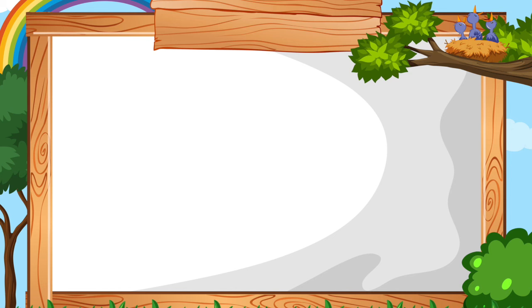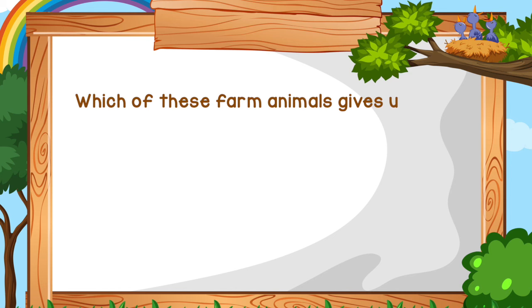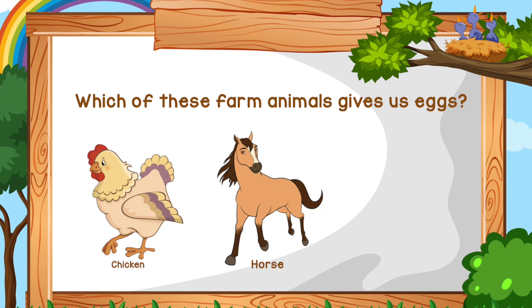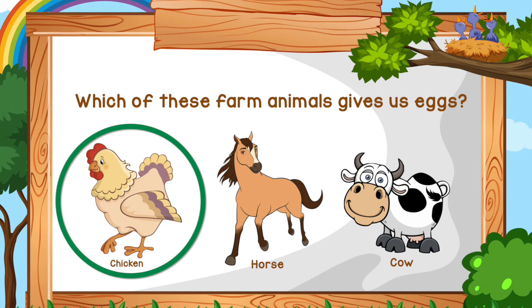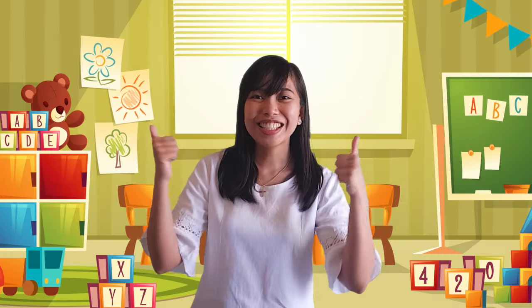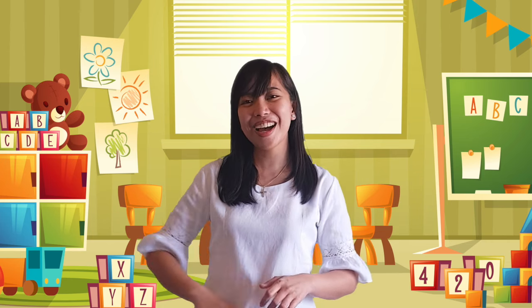Which of these farm animals gives us eggs? Chicken. Horse. Or cow. Very good! The correct answer is chicken. Good job! You remembered our lesson. I hope you learned a lot today. See you again next time.